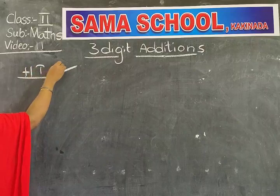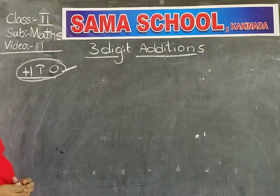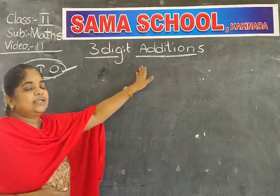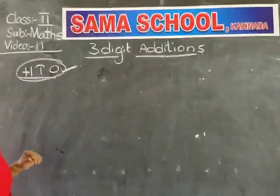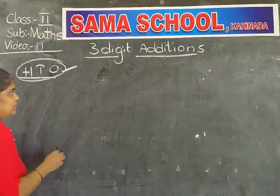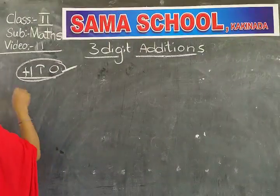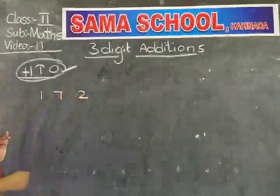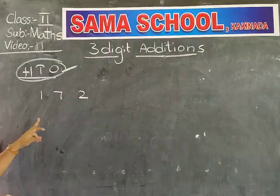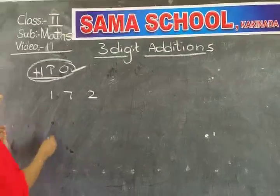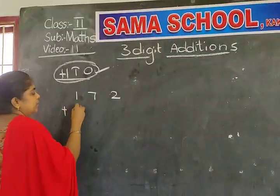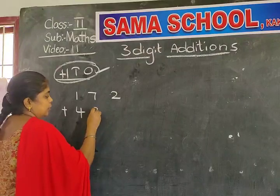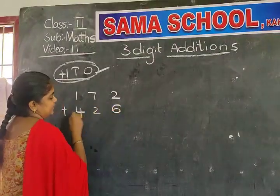Three place values will come because we are going to learn three-digit additions. I am writing three numbers. One hundred and seventy-two.